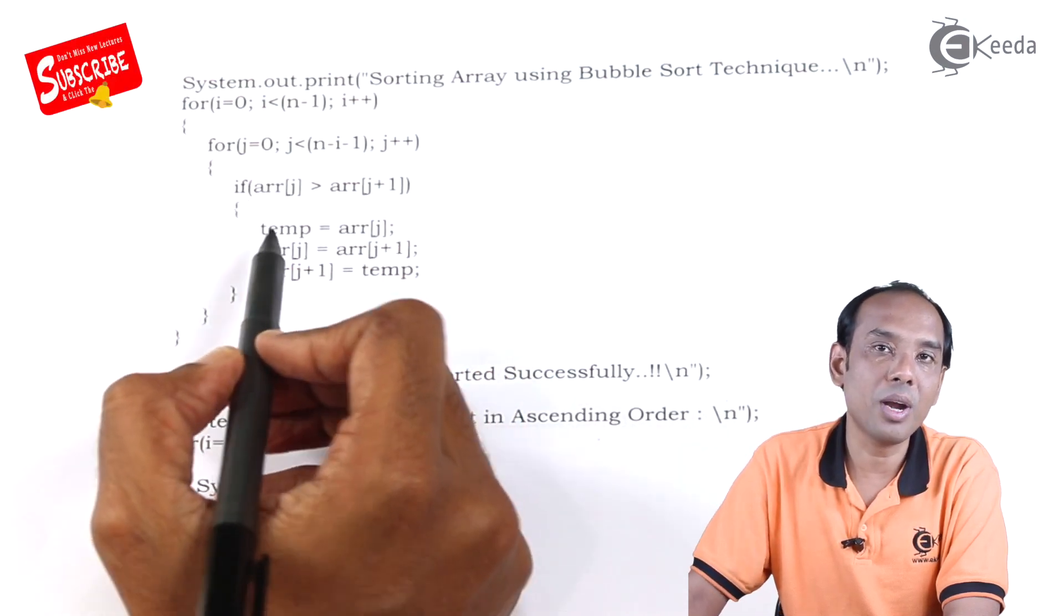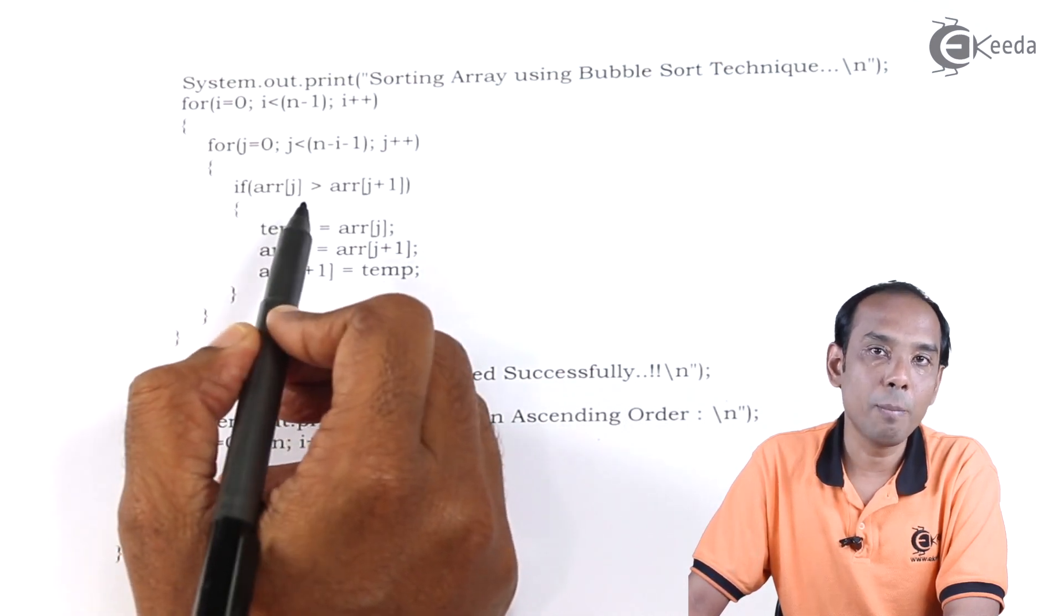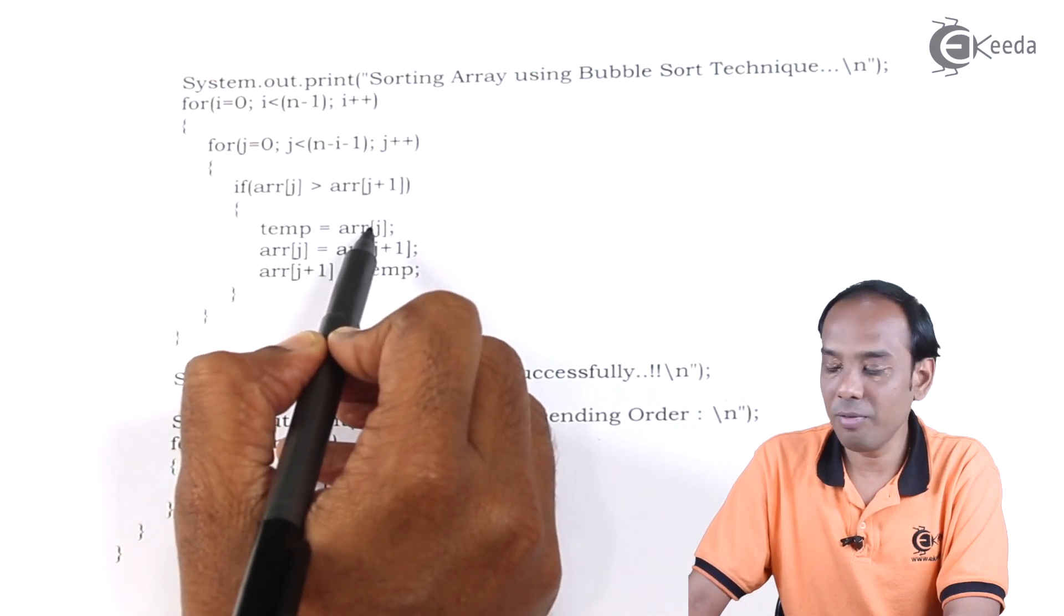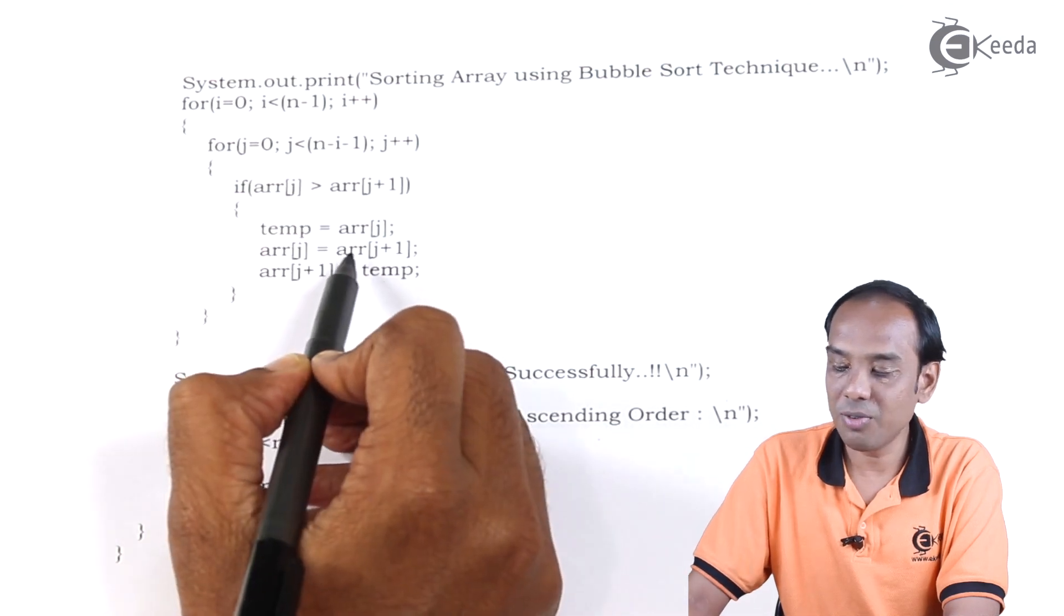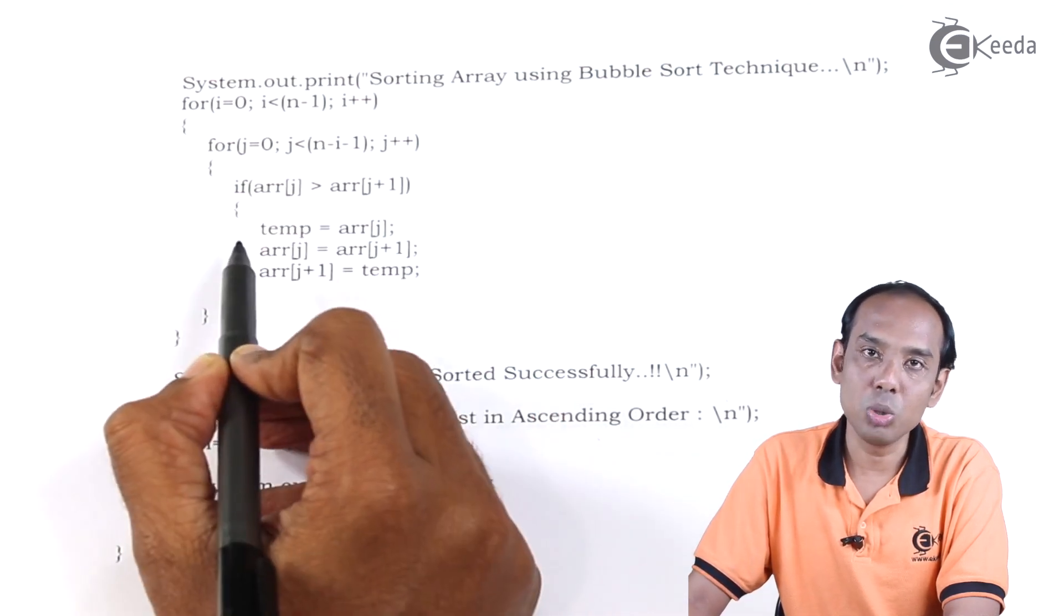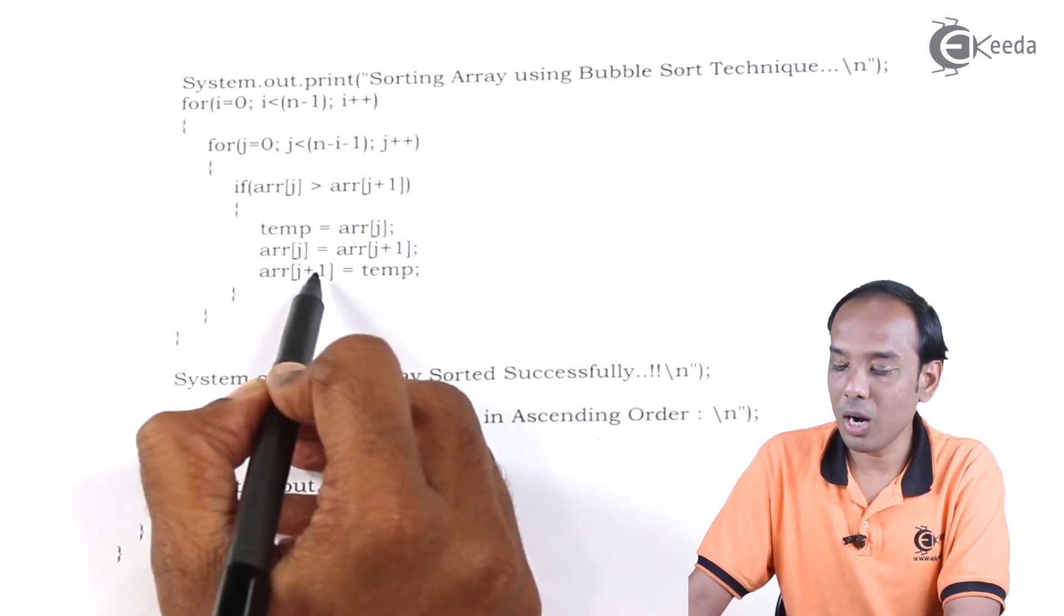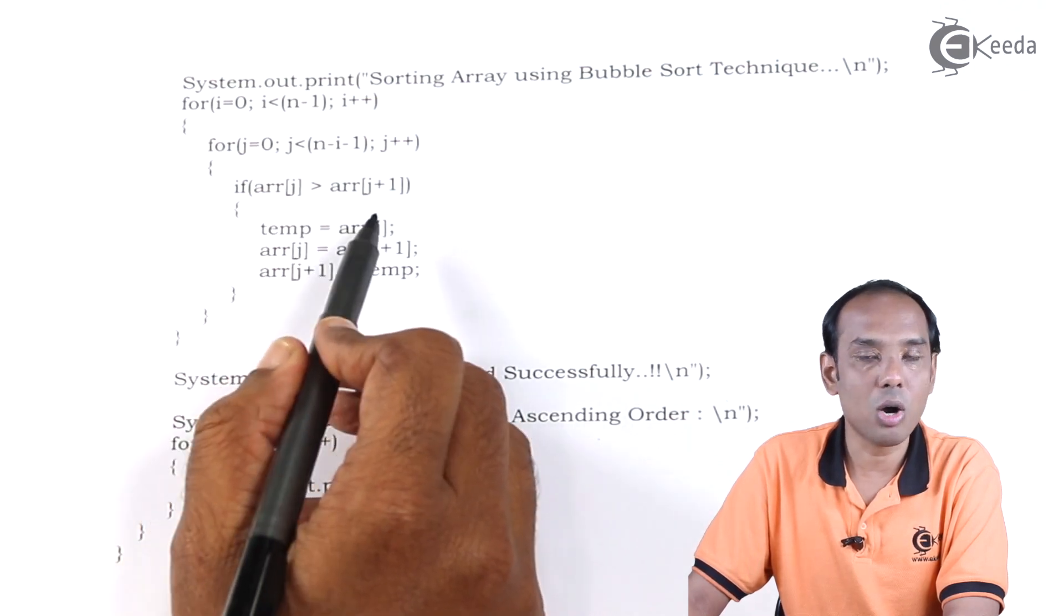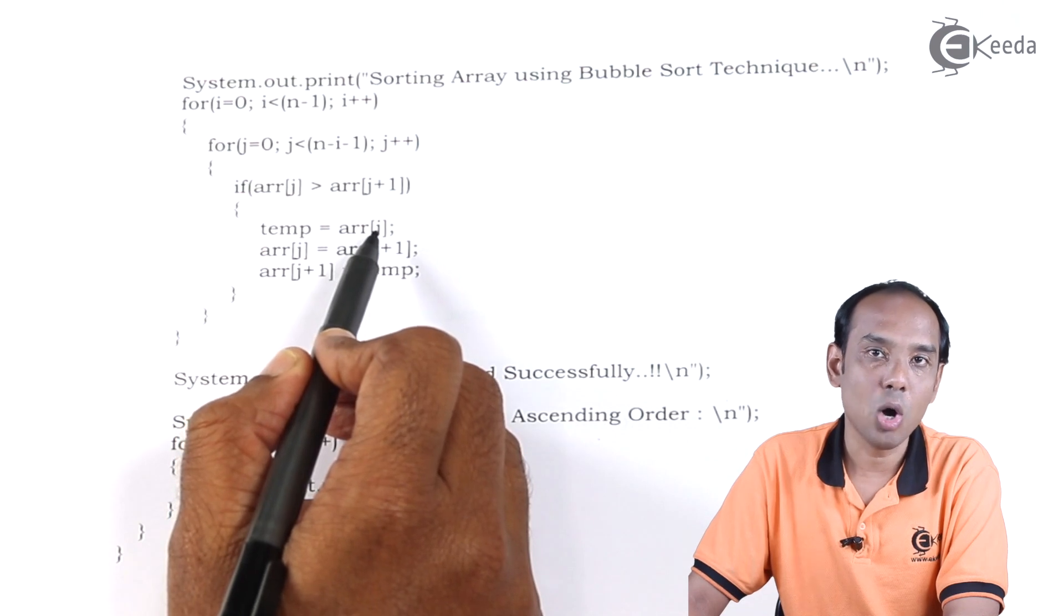For this I have used a temporary variable called temp. Now we will look at the particular code. temp equal to arr[j]. We transfer the value from arr[j] to the temp variable. Then we transfer the value of j+1 to arr[j]. Then we transfer the value of temp to arr[j+1]. Like this we have swapped the elements if they are not in proper order. The order which we have considered is ascending order.